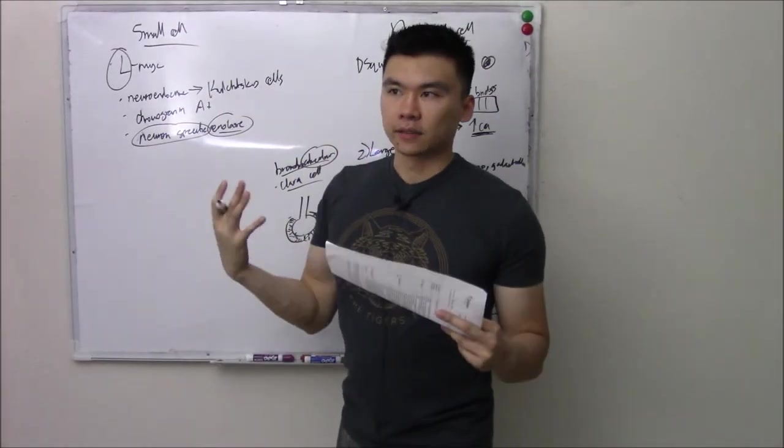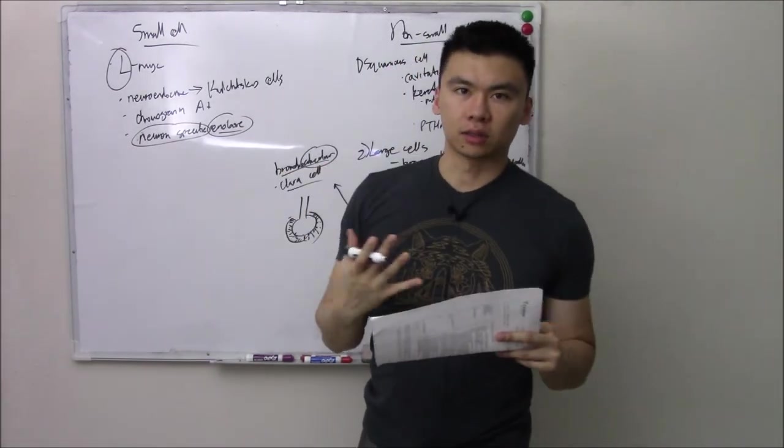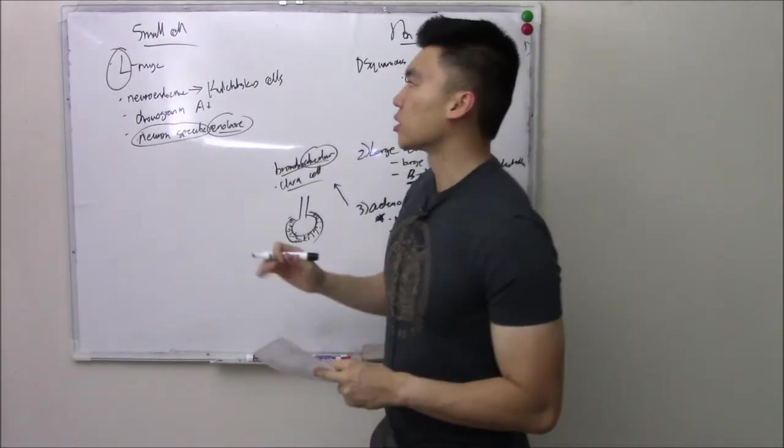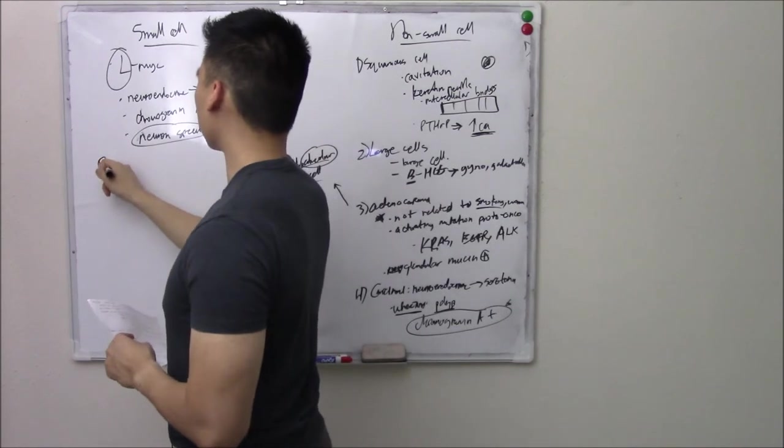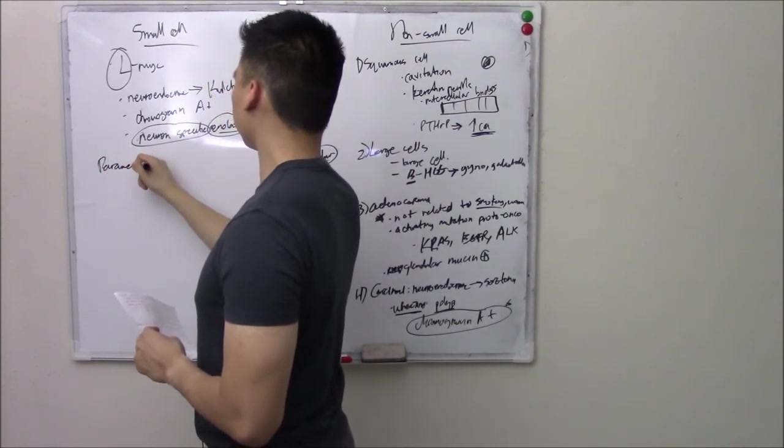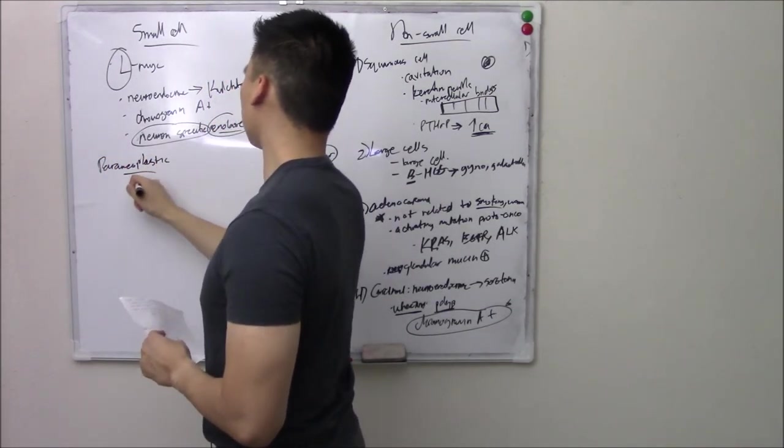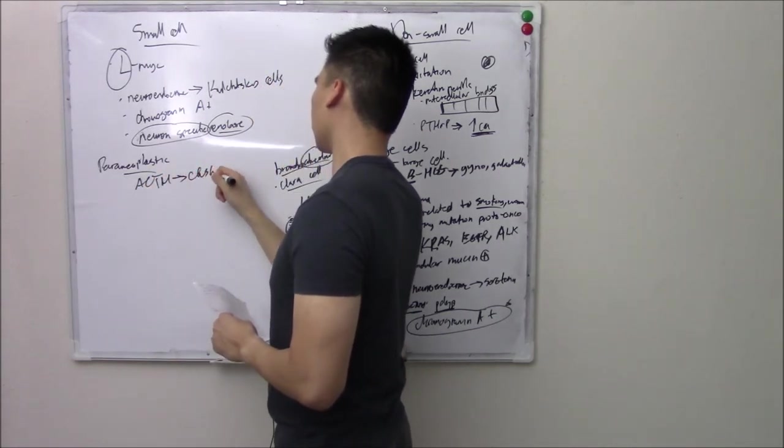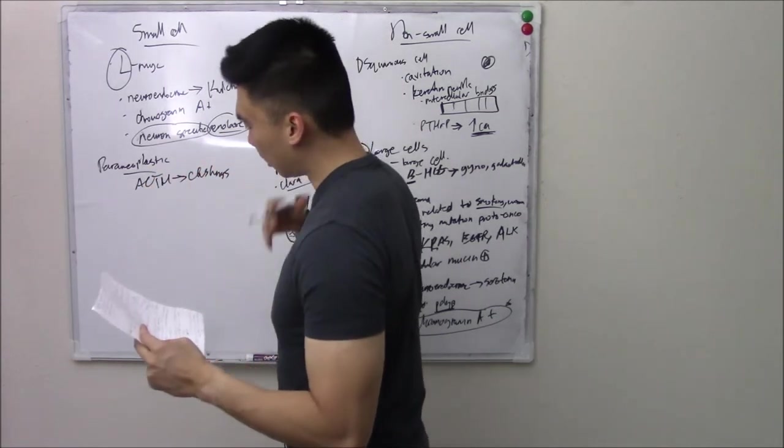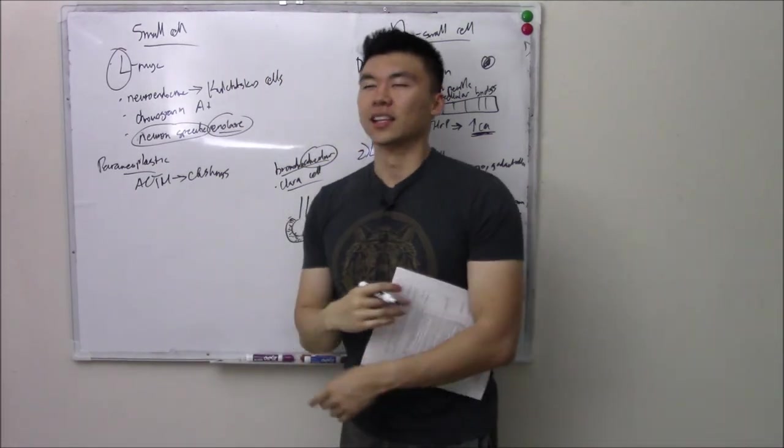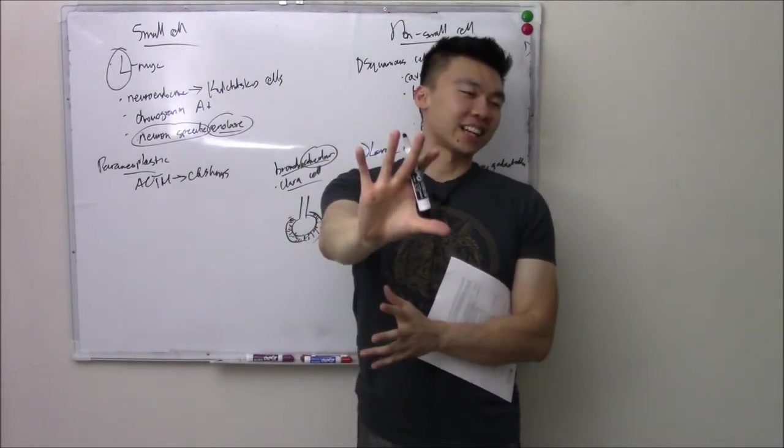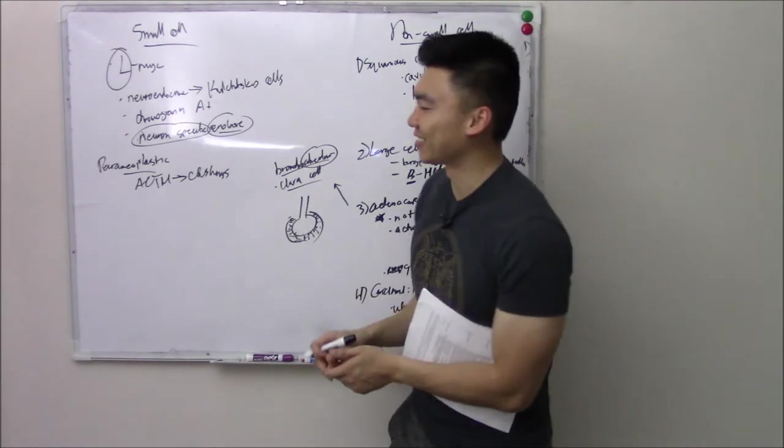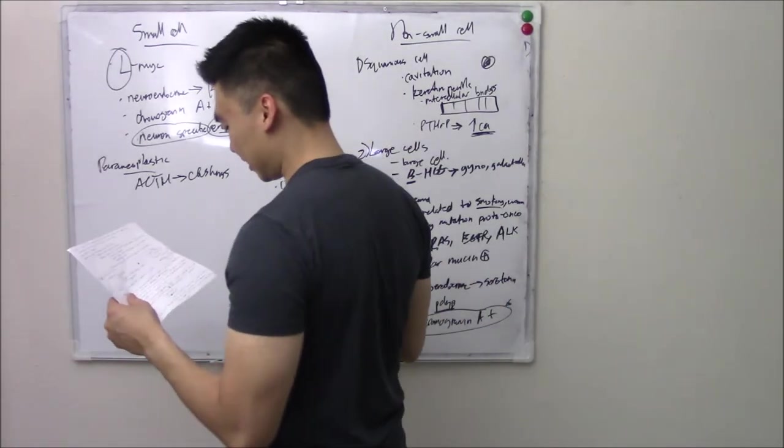Now, your small cell lung cancer being from neuroendocrine cells really likes to release a ton of hormones. It's associated with a ton of paraneoplastic syndromes. It can release ACTH when you have too much ACTH. What do you call that? It causes Cushing's, right? Cushing's. And all the signs of Cushing's. Pause the video. List five signs of Cushing's. How about that? That's a good mental exercise.